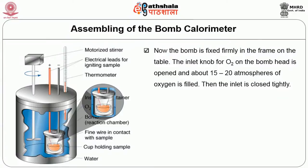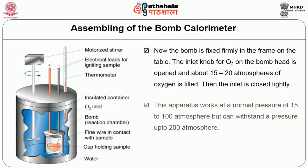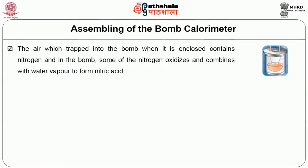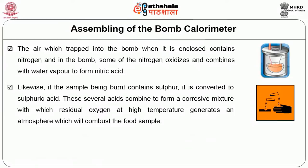The inside knob for oxygen on the bomb head is opened and about 15 to 20 atmospheres of oxygen is filled, then the inlet is closed tightly. This apparatus works at a normal pressure of 15 to 100 atmospheres but can withstand pressure up to 200 atmospheres. The air trapped inside the bomb contains nitrogen, and some nitrogen oxidizes and combines with water vapor to form nitric acid. If the sample contains sulfur, it is converted to sulfuric acid, forming a corrosive mixture which combusts the food sample.